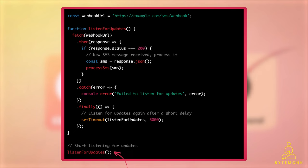To clarify further, the client is not polling a server URL or a REST endpoint, but listening to its own URL — the webhook URL — which is typically on a web server or application server controlled by the client. The webhook URL is essentially a callback URL that the server can use to notify the client about events or updates.